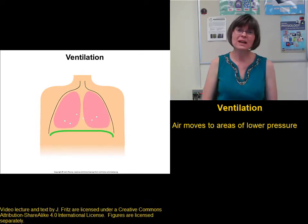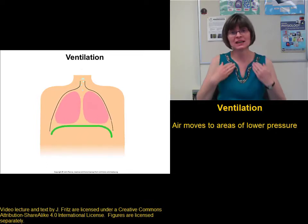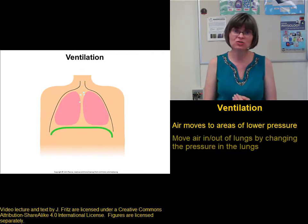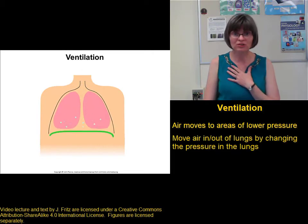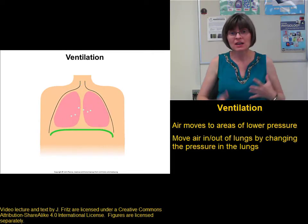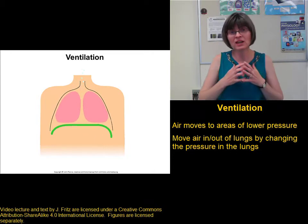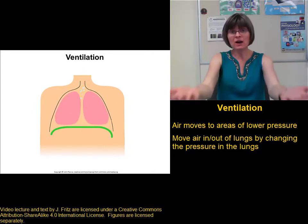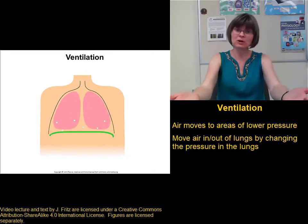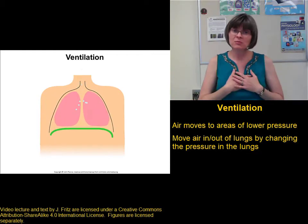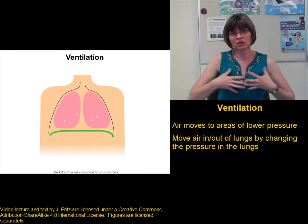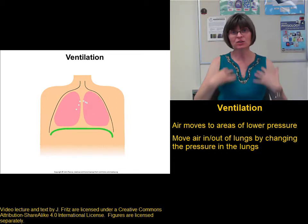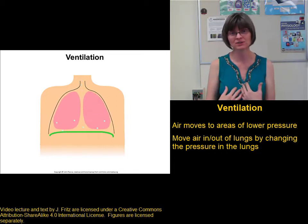The way we get air to move in and out of our lungs is by changing the pressure in our lungs. If we make the pressure in our lungs higher, that's going to make air want to go out into the lower pressure surrounding air. If we make the pressure in our lungs lower, that's going to draw air in since the lower pressure area is in our lungs.